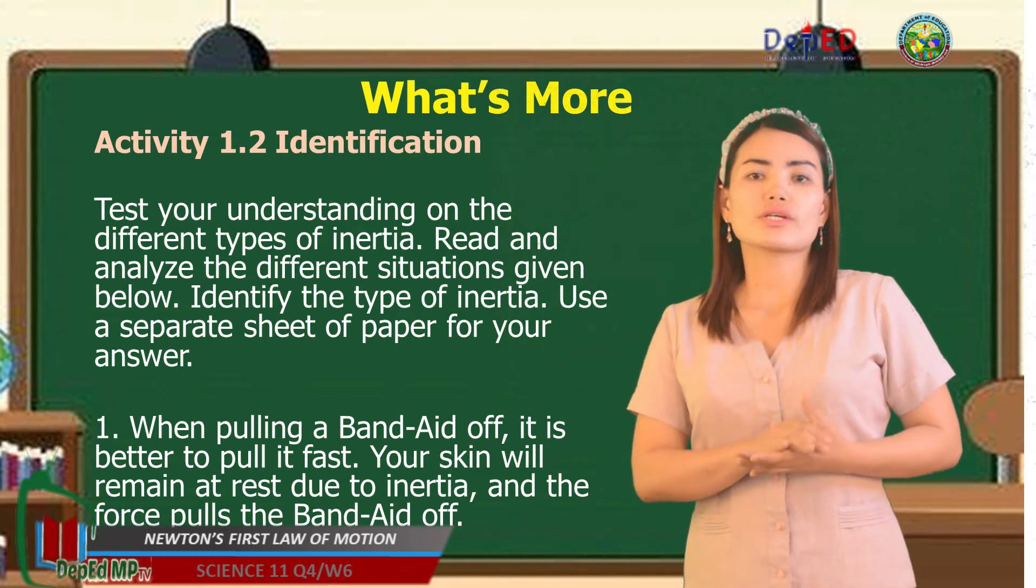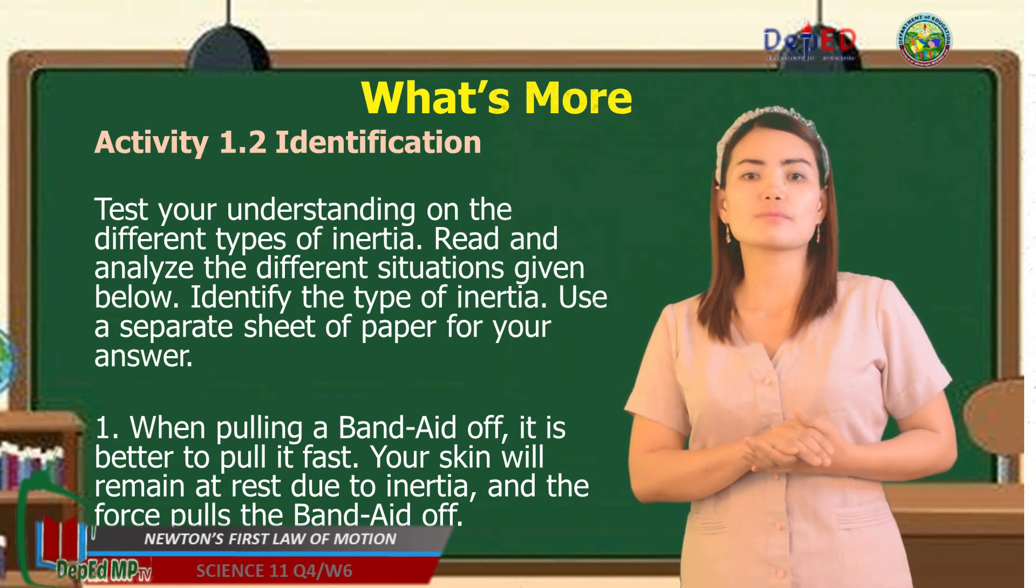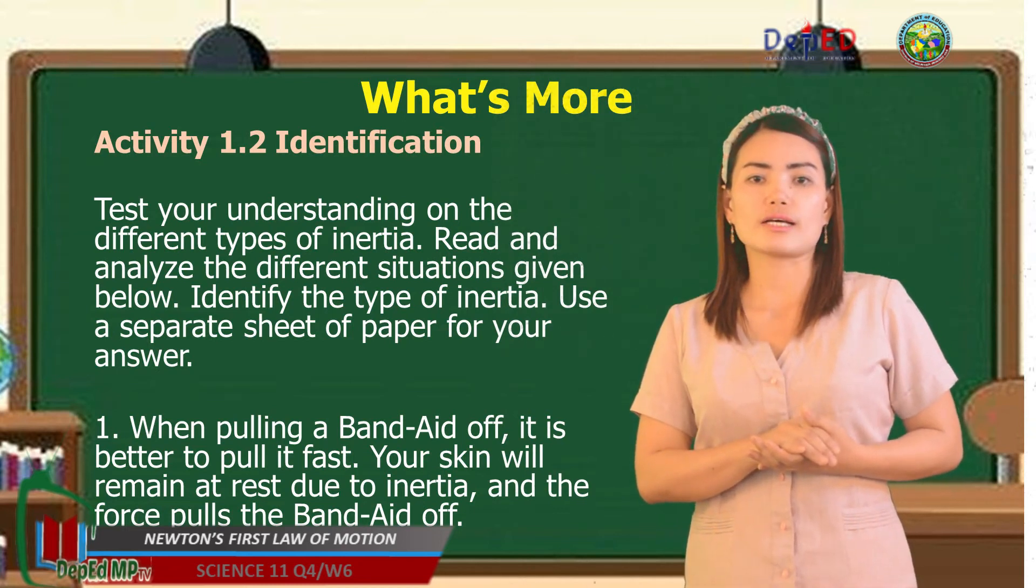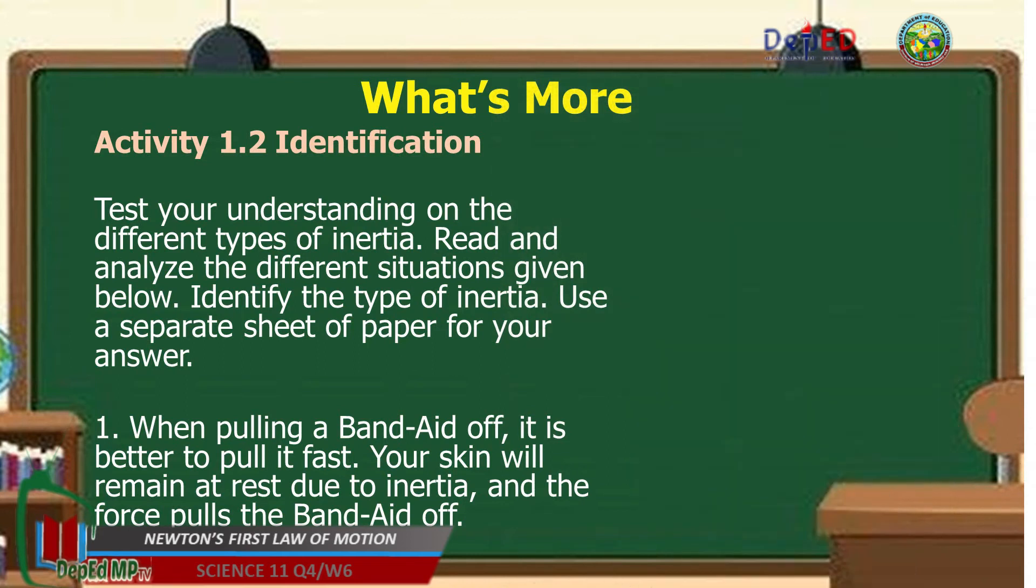Now, let's test your understanding on the different types of inertia. Read and analyze the different situations. Identify the type of inertia. Use a separate sheet of paper for your answer. See page 12 of your self-learning module. So let's get started. Number 1. When pulling a band-aid off, it is better to pull it fast. Your skin will remain at rest due to inertia, and the force pulls the band-aid off.